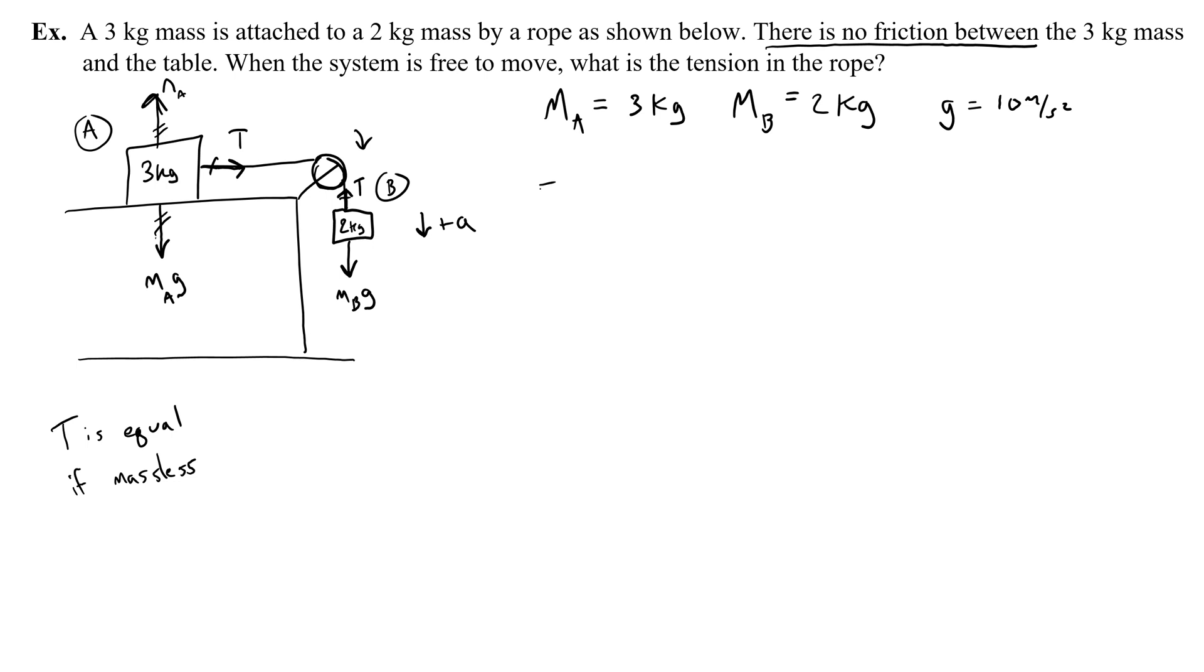If I was to think about the net force acting on block A, well, it's just tension. That's it. There's nothing that's going to be pulling to the left, and tension is an unbalanced force. And of course, we said the acceleration is to the right. That makes sense. So since the tension is in the same direction, I make this positive, not negative. For B, I have the weight down and tension up.